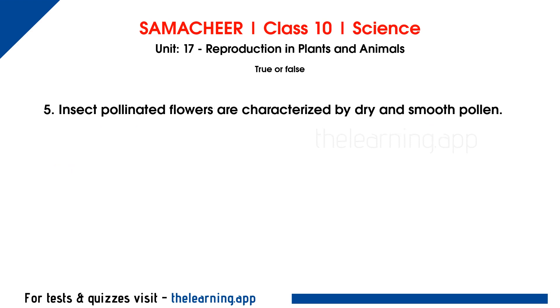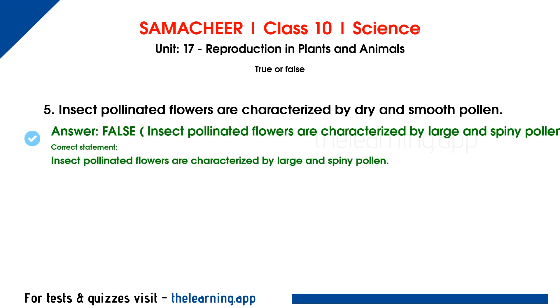Fifth question: insect pollinated flowers are characterized by dry and smooth pollen. This is false. The correct statement is: insect pollinated flowers are characterized by large and spiny pollen.